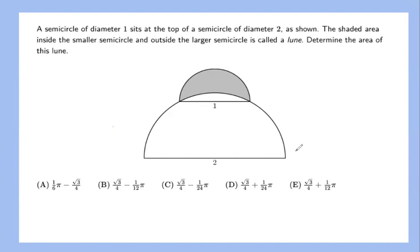The shaded area inside the smallest circle and outside the largest semicircle is called a lune. We're looking for the area of this lune. Since this is a region that we don't have any nice formula for, we call it a funky region.